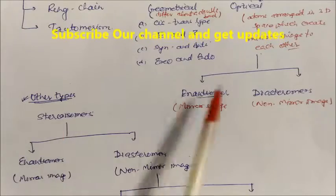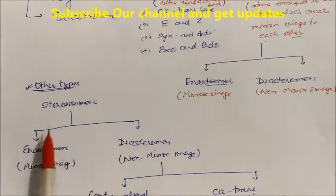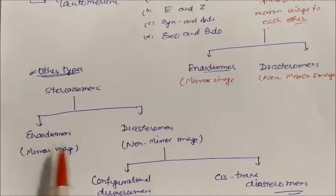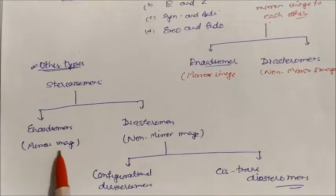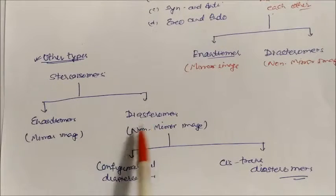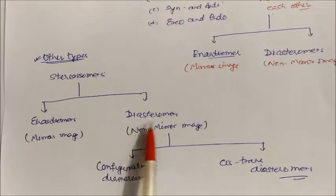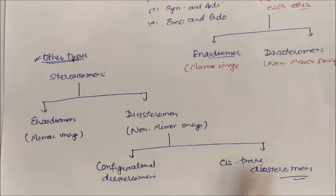We can also divide stereoisomers into two types: enantiomers and diastereomers. Enantiomers are those forming mirror images, and diastereomers are those forming non-mirror images. Under diastereomers, we can further divide into two types: configurational isomers and cis-trans isomers. This completes one type of classification.